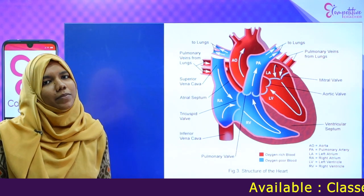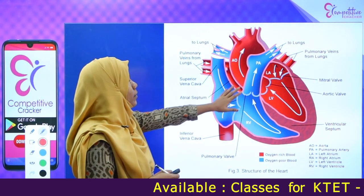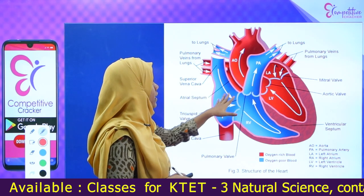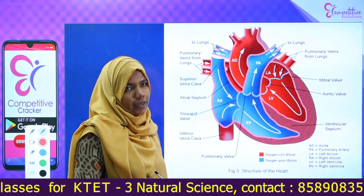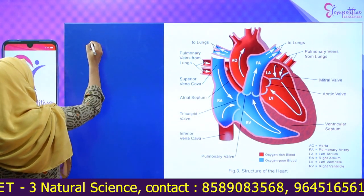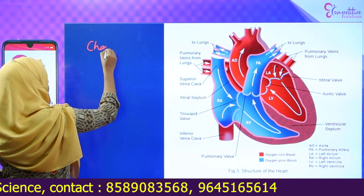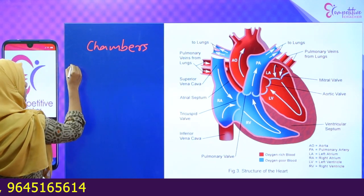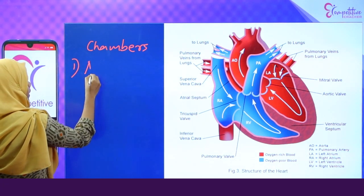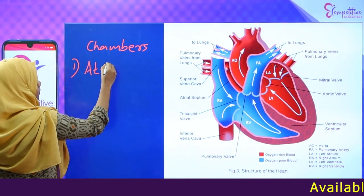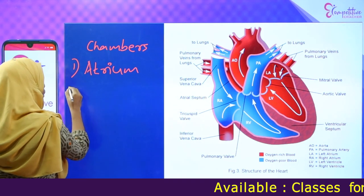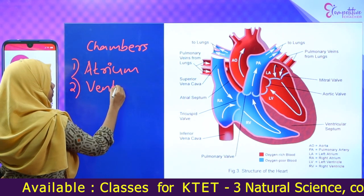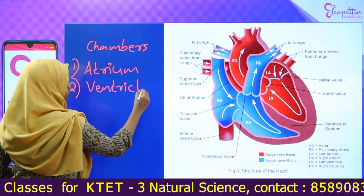We are going to look at the chambers of the heart. In the heart, we have chambers. The name of one type of chamber is Atrium. The upper chambers are called Atrium, and the lower chambers are called Ventricle.